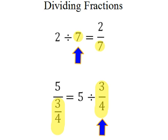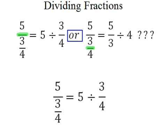Now, I want to draw your attention to the second example and give you a word of caution. It would seem that there are two ways to interpret 5 over 3 over 4. We could read it as 5 divided by 3 fourths, or we could read it as 5 thirds divided by 4. Each will give a different answer, but only one way is correct.